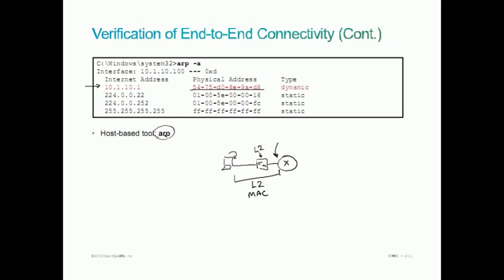And if the ARP, by the way, if the whole thing is bad, you can do an ARP with a space dash D, and that would clear all of those dynamic entries. So you could relearn the MAC addresses in case it was wrong. And we can do something similar to that on the switch as well.